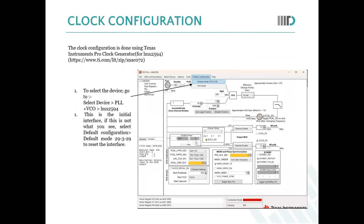Now coming to the clock configuration part. For clock configuration, you need to download the TICS Pro software clock generator from Texas Instruments. After downloading, follow the link provided to get the TICS Pro software. After downloading, go to the default configuration and set it to the default mode — select the device first.